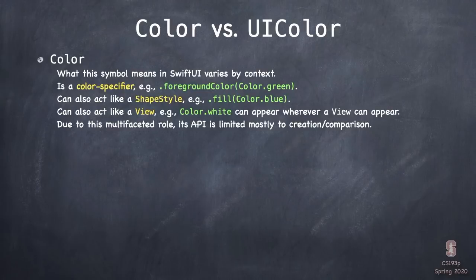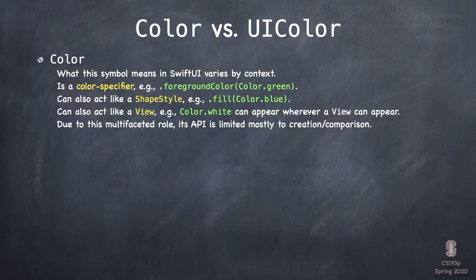So colors and images — let's talk about colors first. There is a struct called Color, which we've been using. And there's another thing called UIColor. You might wonder why there are two things named so similarly. Well, a Color can play different roles: it can be a color specifier like foreground color green, or it can be a shape style like fill color blue, and it can even be a view — color.white — which appears anywhere a view appears.